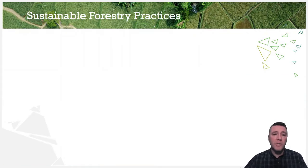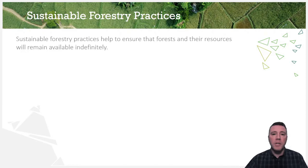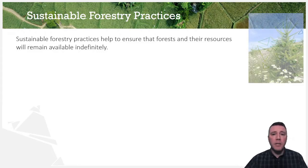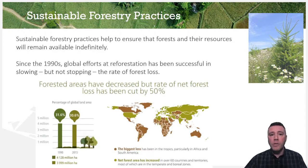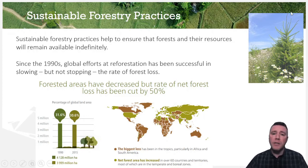As is true with sustainable practices for any resource, sustainable forestry practices are important in ensuring the future availability of forest resources. Although the world is not likely to meet the goal set forth by the United Nations' Strategic Plan for Forests, to increase forest land by 3% by 2030, the rate of forest loss globally has decreased since the 1990s. Some countries have been successful in increasing forest cover, but others, mainly in the tropics, have seen the greatest loss in forest land.